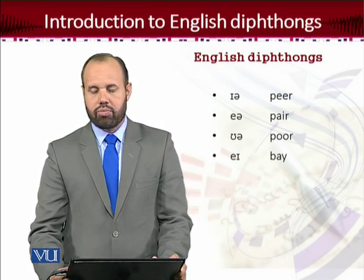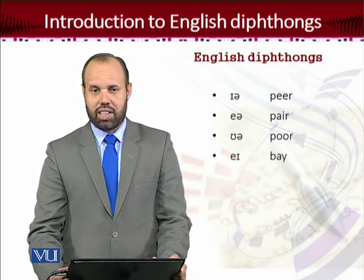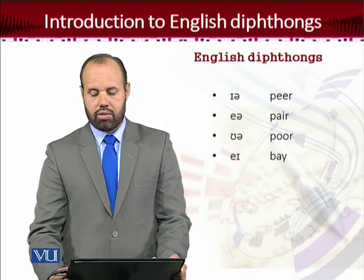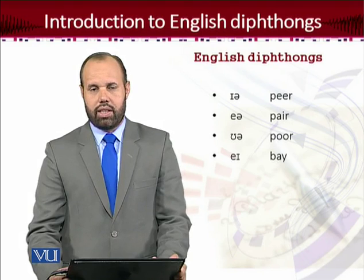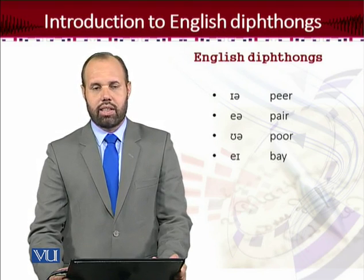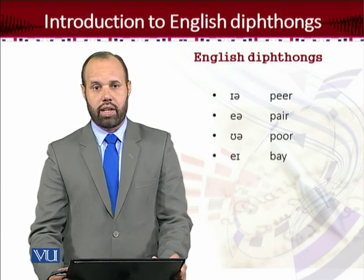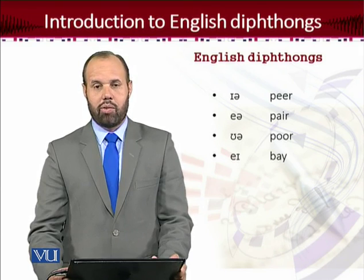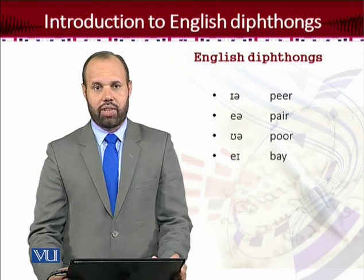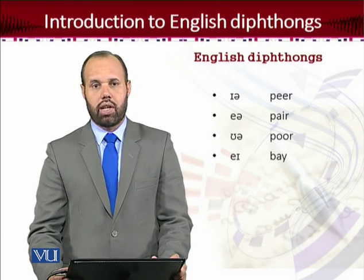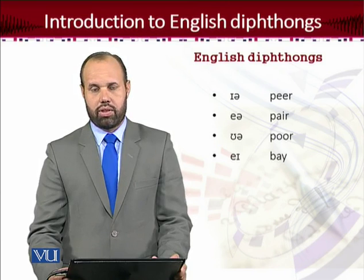Now there are closing diphthongs. The closing diphthong which ends with /ɪ/ — the starting is /e/ and the ending is /ɪ/. When they are combined together, the sound pronounced is /eɪ/. In words like 'bay,' 'play,' or 'say.' These are the sounds which have this /eɪ/ sound.